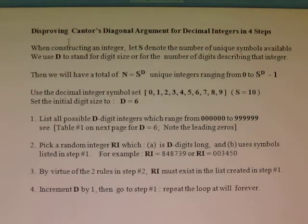Then we will have a total of n equals s to the d unique integers ranging from 0 to s to the d minus 1. Use the decimal integer symbol set, s equals 10, which contains the symbols from 0 through 9. Set the initial digit size to d equals 6. It is a good start.